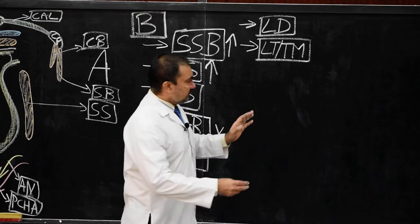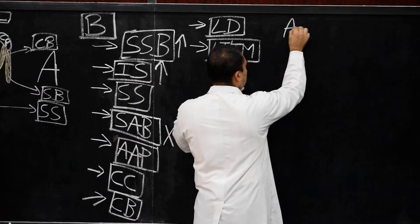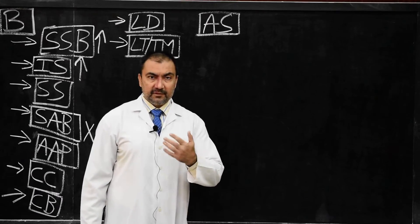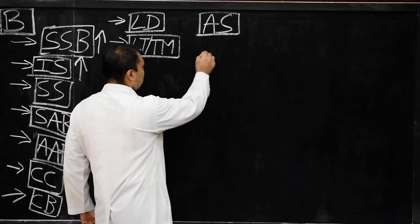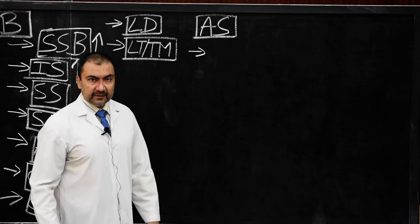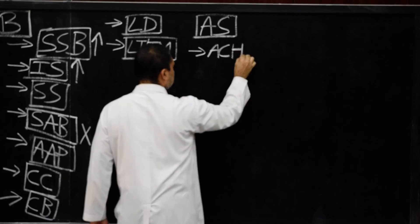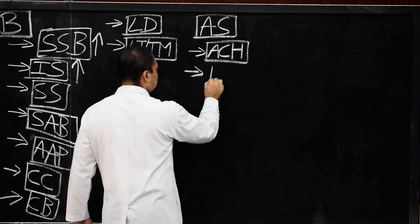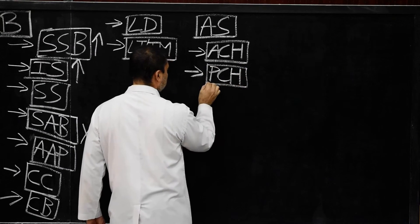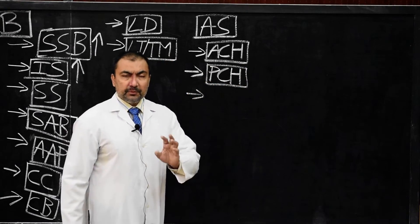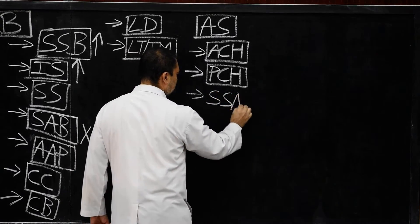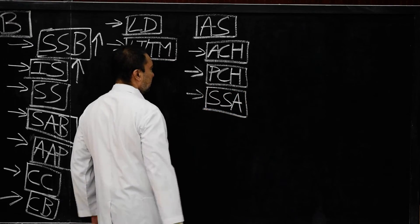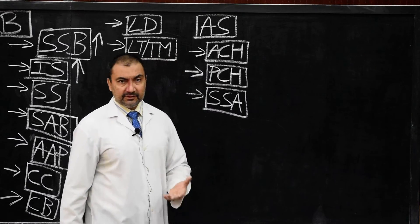Now, after discussing the bursae, we come to the arterial supply — very important. You have to remember the names of the three arteries which supply the shoulder joint, and these are often asked in one-mark questions. Number one: anterior circumflex humeral artery. Number two: posterior circumflex humeral artery. Number three: suprascapular artery. These three arteries are very easy to remember: anterior circumflex humeral artery, posterior circumflex humeral artery, and suprascapular artery.